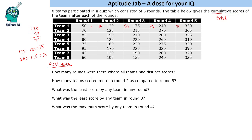If the question asks how many rounds had all teams with distinct scores, we need data for all rounds. How many teams scored more in round 2 compared to round 5 — we need round 2 and round 5 data. What was the least score by any team in any round — again we need all round data. What was the least score in round 3 — we just need round 3 data. And the next question needs just round 4 data. So if you have very little time, you must attempt only those last two questions.